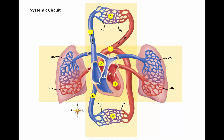These veins merge into the superior vena cava from above and into the inferior vena cava from below. The vena cava drain into the right atrium, concluding the systemic circulatory route. The systemic circulatory route begins at the left ventricle and ends at the right atrium.